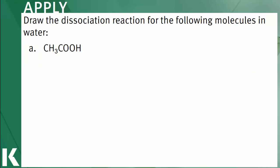In our apply question, we're asked to draw the dissociation reaction for acetic acid in water. Acetic acid is a weak acid with a carboxylic acid group, and in the presence of water, it will donate a proton to water to form the acetate anion and the hydronium cation. Because it is weak, the majority of acetic acid will stay in the acid form.